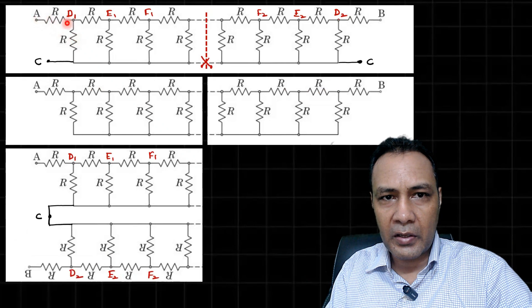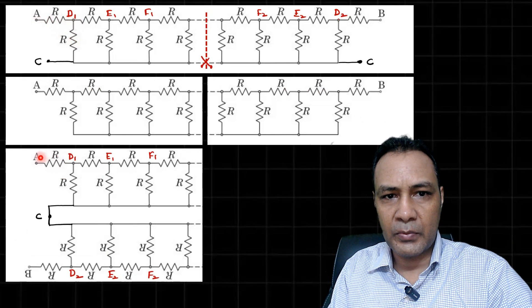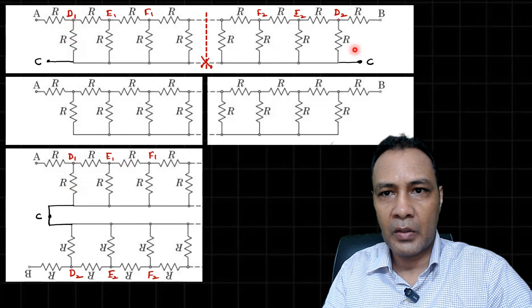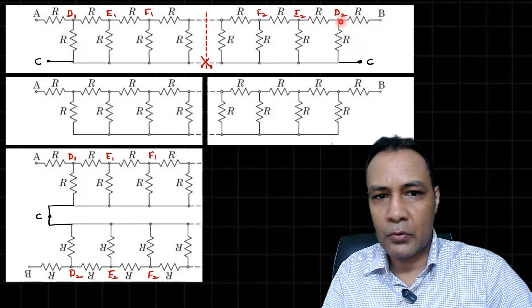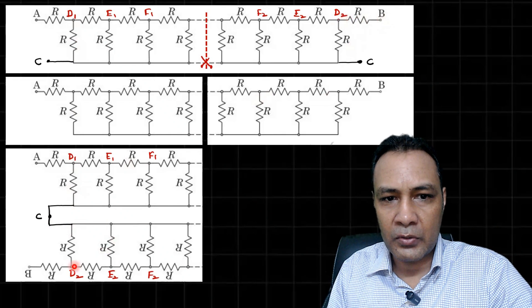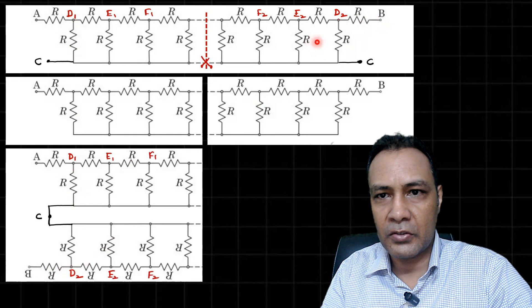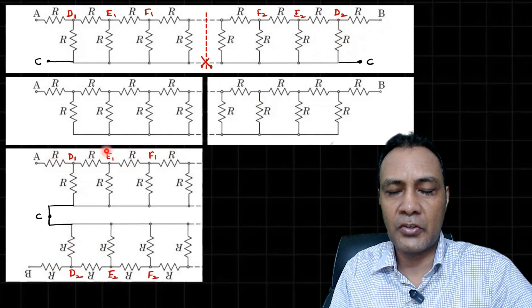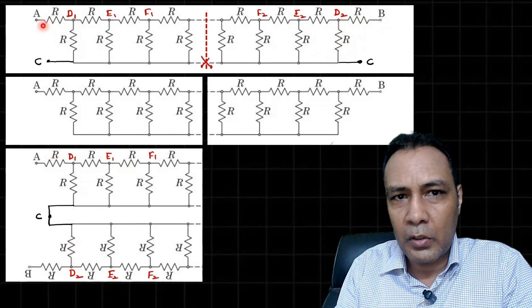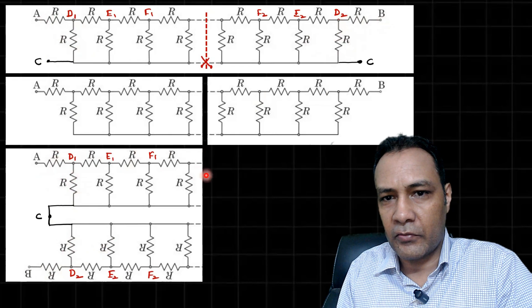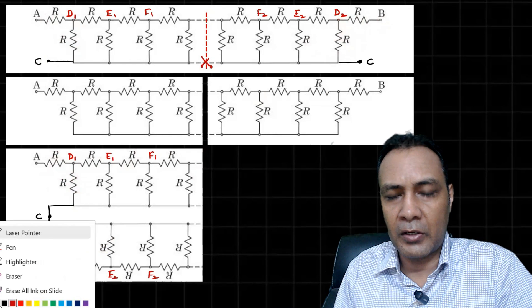This is between A and D1, this is between A and D1. This is between D1 and C, this is between D1 and C. This is between B and D2, this is between B and D2. This is between D2 and C, this is between D2 and C. In the same way you can check all. So this whole network is equivalent to this.